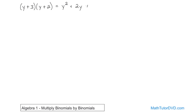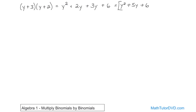3 times y gives you 3y, and then separately 3 times 2 gives you 6, so it's plus 6. This is the answer, but we immediately see: y squared has no other y squareds to add to. The two interior items — 2y and 3y — are like terms because they both contain y, so we add them: 2 plus 3 is 5. So what we have is y squared plus 5y plus 6. That is the final answer — circle that. You can't add any more of these terms because they're not like terms: y squared, y, and then just a number.